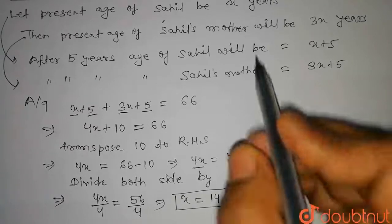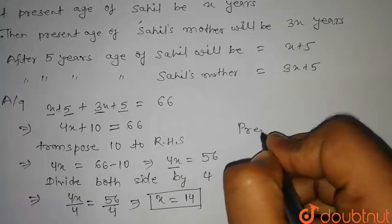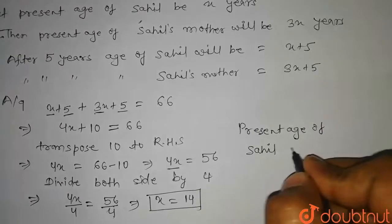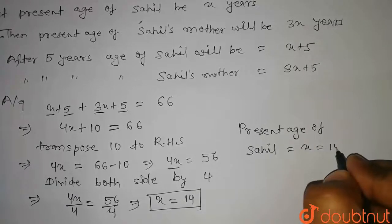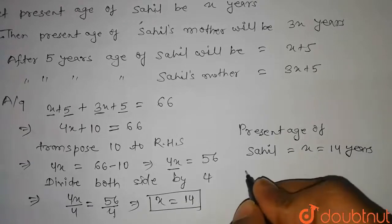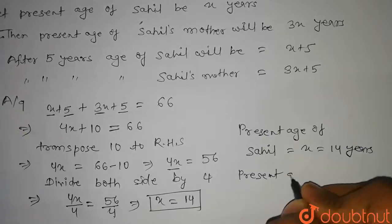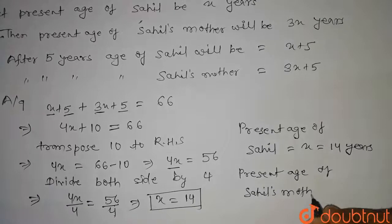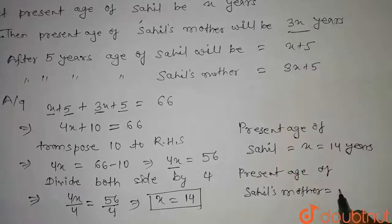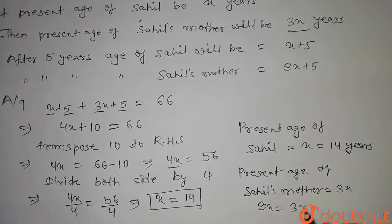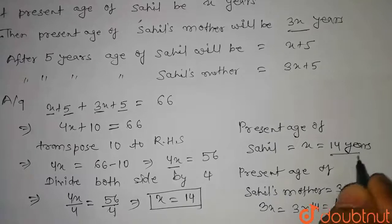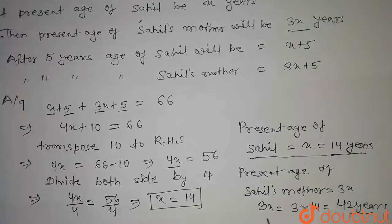Now we have to find the present ages. The present age of Sahil is x, which is 14 years. And 3x will be equal to 3 into 14, that is 42 years. So the present age of Sahil is 14 years and the present age of Sahil's mother is 42 years. This is our answer. Thank you.